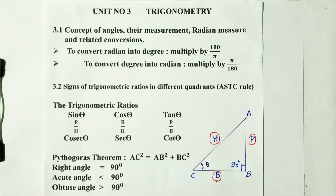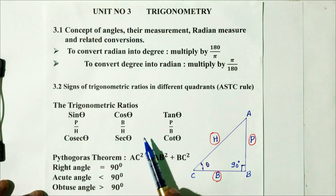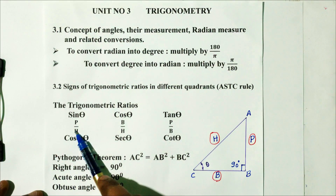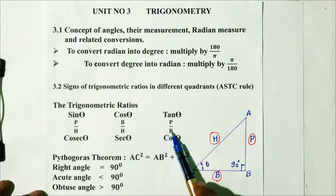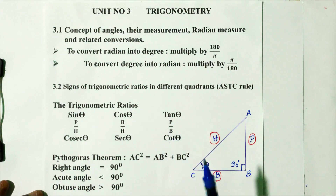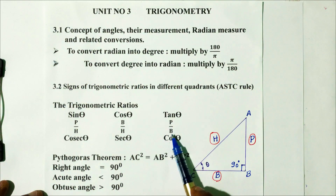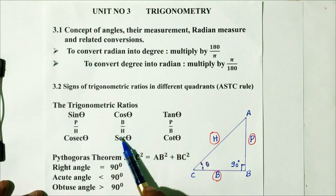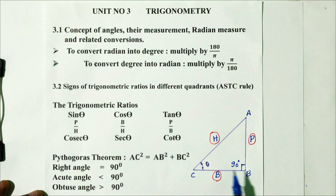These are the 6 trigonometric ratios. Sin theta is the perpendicular divided by hypotenuse. Cos theta is the base divided by hypotenuse. Tan theta is the perpendicular by base. Cosecant is hypotenuse by perpendicular. Secant is hypotenuse by base. Cotangent is the base divided by perpendicular. These are important formulas.